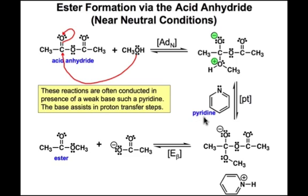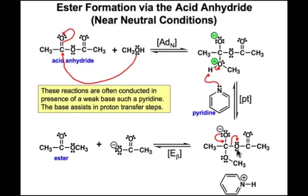The purpose of pyridine is to shuttle protons around. It's going to do a deprotonation on the very acidic proton generated in the ADn step, creating the pyridinium cation. This leaves an oxyanion that is now ready to do a β-elimination — kicking out the acetate group, which is a reasonably good leaving group as needed under these neutral conditions.